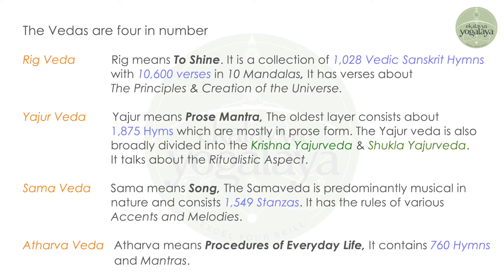The four Vedas are: Rigveda, Yajurveda, Samaveda, and Atharvanaveda. Rigveda means 'to shine.' It is a collection of 1028 Vedic Sanskrit hymns with 10,600 verses in 10 mandalas. It has verses about the principles and creation of the universe.